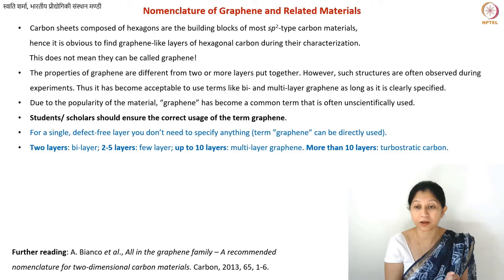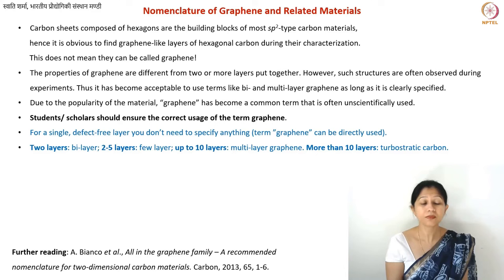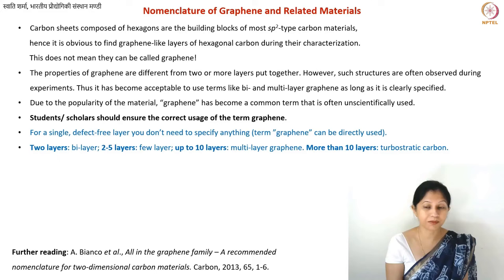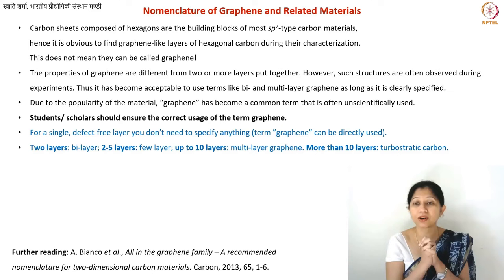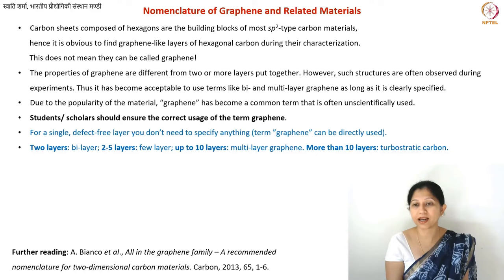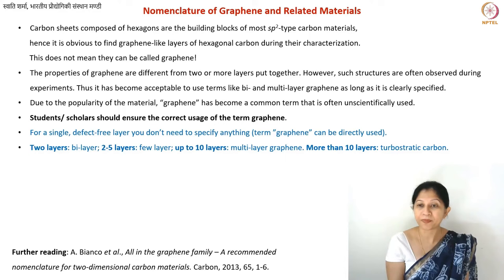Regarding layer count: two layers is bilayer, as the name suggests. Few-layer graphene is the term used for two to five layers. Between two to three layers people sometimes call it bilayer graphene, but up to five layers you can call it few-layer. More than five but less than ten layers is multi-layer graphene. If you have more than ten layers, the material should not be called graphene — it should be called turbostratic carbon, because then you are talking about a 3D material, even in powder form.